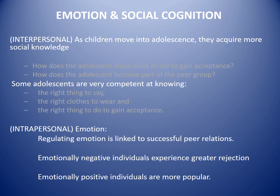Key here is emotion and social cognition, using the terms interpersonal and intrapersonal. Interpersonal refers to how well you understand interaction dynamics between people; intrapersonal refers to understanding and regulating your own internal feelings and emotions. Some people have a good sense of who they are but struggle interacting with others, while some are social butterflies without a well-developed internal anchor. As children move into adolescence, they gain more social knowledge.